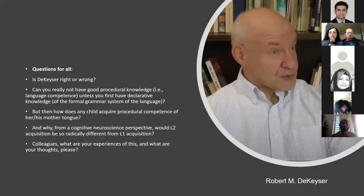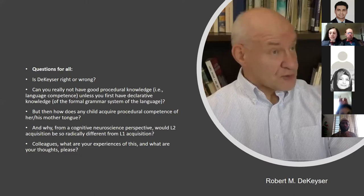The question for all: is De Kaiser right or wrong? Can you really not have good procedural knowledge unless you first have declarative knowledge? But then how does any child acquire procedural competence of her or his mother tongue? And why, from a cognitive neuroscience perspective, would second language acquisition be so radically different from first language acquisition? Please write your thoughts in the Zoom chat space.